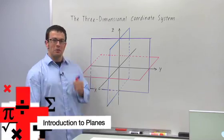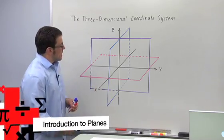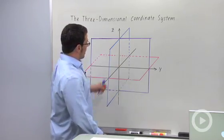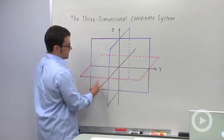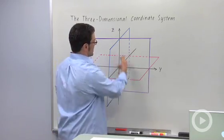I want to talk about planes. The three-dimensional coordinate system is loaded with them. So let's take a look. We have, first of all, three coordinate axes: the x-axis, the y-axis, and the z-axis.